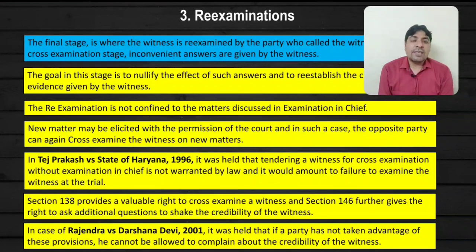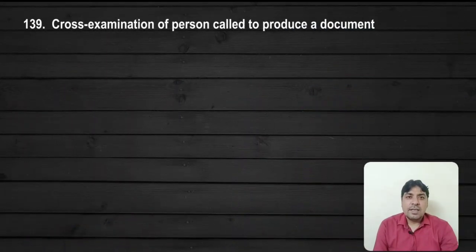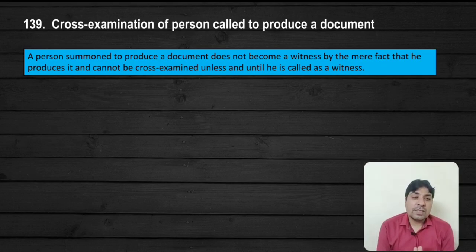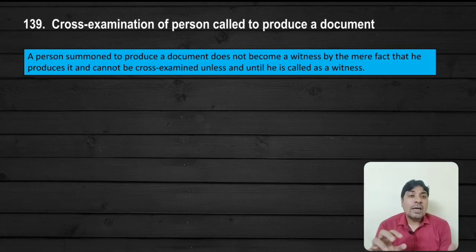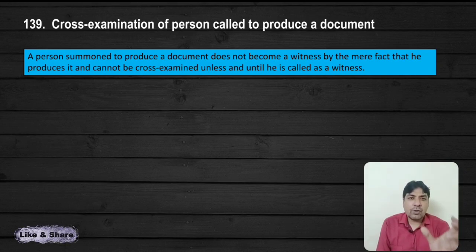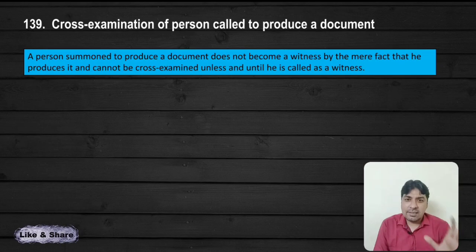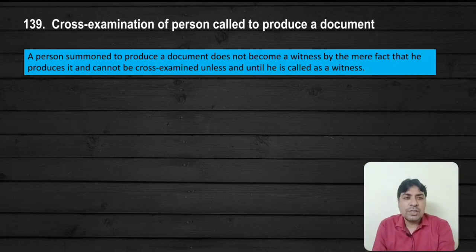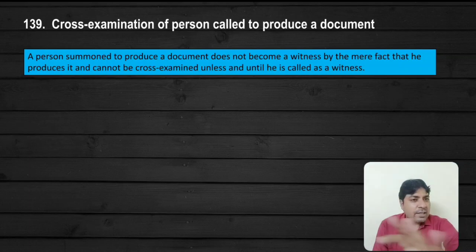Section 139 — Cross-examination of person called to produce a document. A person summoned to produce a document does not become a witness by the mere fact that he produces it, and cannot be cross-examined unless and until he is called as a witness. So if any person is summoned to produce a document, he cannot be cross-examined unless he is called as a witness. If the court says you have a document in your possession and you produce it, your work is only to produce the document — cross-examination cannot happen unless you are formally called as a witness.